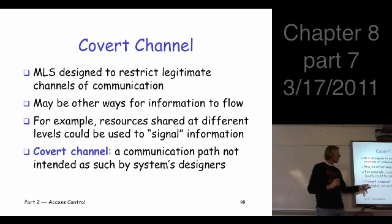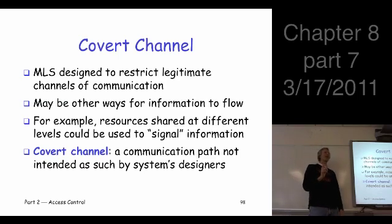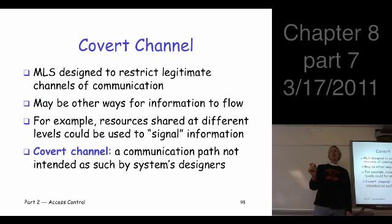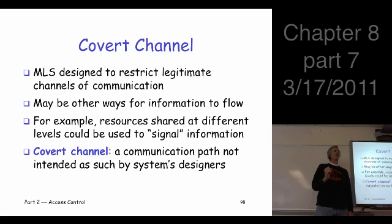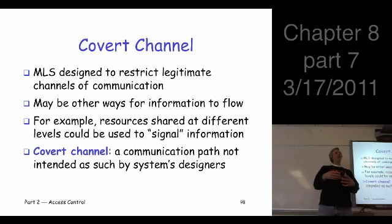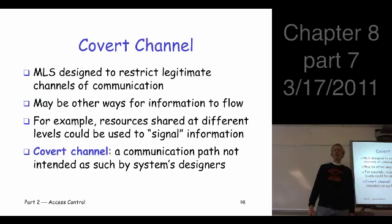We'll call this a covert channel. The definition is a communication path that was not intended as such by whoever designed the system — a way for people to communicate where it looks like they're just doing legitimate things they're allowed to do with the system. Here's the scenario: Alice has some top secret information and she wants to give it to Bob, who doesn't have a top secret clearance. She could take the document, fold it up, put it in her back pocket and walk out the door, but that's illegal. Could she do something more subtle that looks like ordinary things she does as part of her regular job, but allows her to communicate this information to Bob and avoid the security of the system?